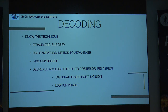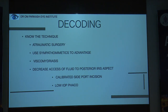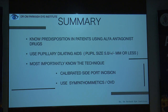In summary: the technique must be atraumatic. Use sympathomimetics — intracameral adrenaline/epinephrine — to your advantage. Use viscomydriasis. Decrease excess fluid to the posterior iris aspect. Calibrated side port incision is critical — it's often overlooked, but an uncalibrated side port causes fluid flux that precipitates IFIS. Low IOP phaco is also very important. In summary: no predisposition in patients using alpha antagonist drugs — your whole staff should be aware. Use pupillary dilating aids to your advantage, and most importantly, know the techniques.